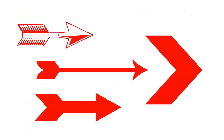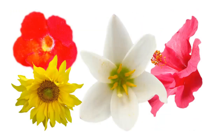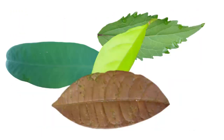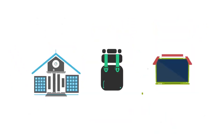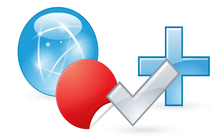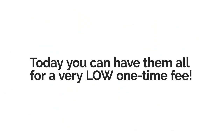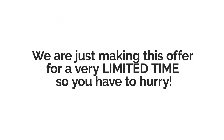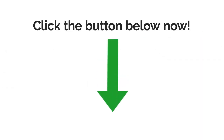This collection includes animated icons, backgrounds, buttons, arrows, and other graphics that you can use to make your videos look even better. Each of these elements costs $10 to $50 individually, but today you can have them all for a very low one-time fee. We're only making this offer for a very limited time, so go ahead and click the button below now.